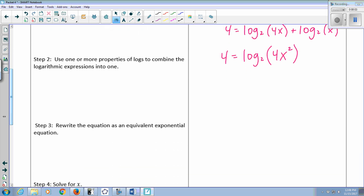My base is 2. My exponent is 4. That equals 4x squared. So 2 to the 4th is 16. Divide both sides by 4, so you get x squared equals 4, which means x is plus or minus 2.